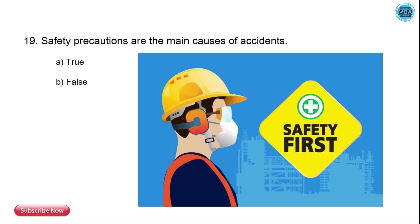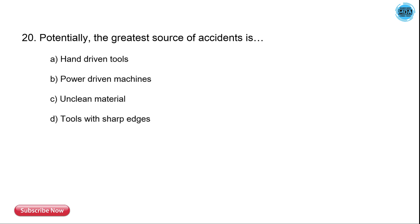The 19th question is: safety precautions are the main cause of accidents — true or false? The correct answer is false. Safety precautions are not the cause of accidents; in fact, we need safety precautions at all times.